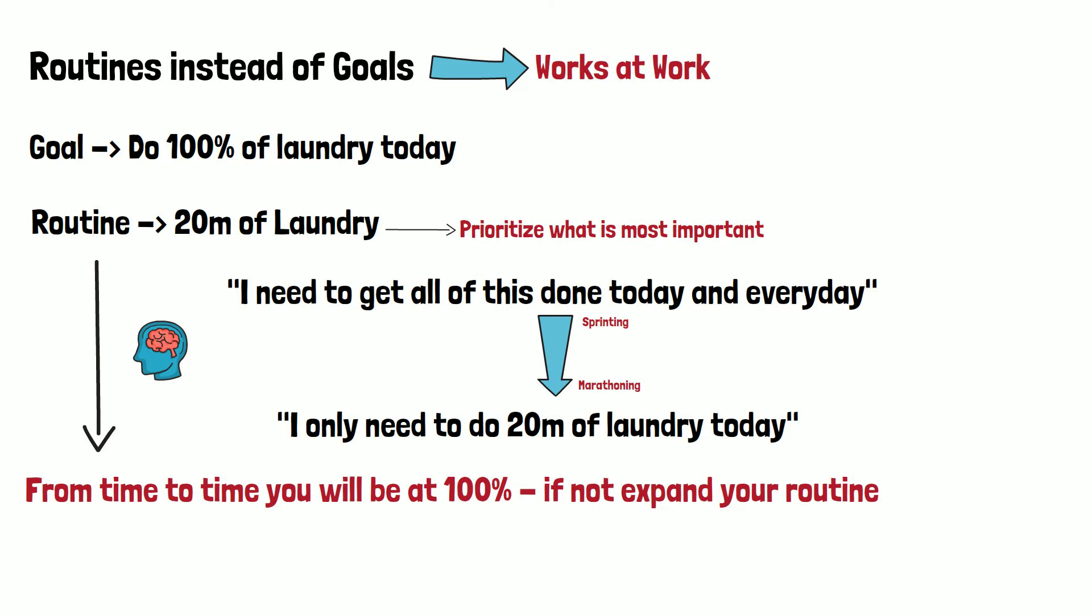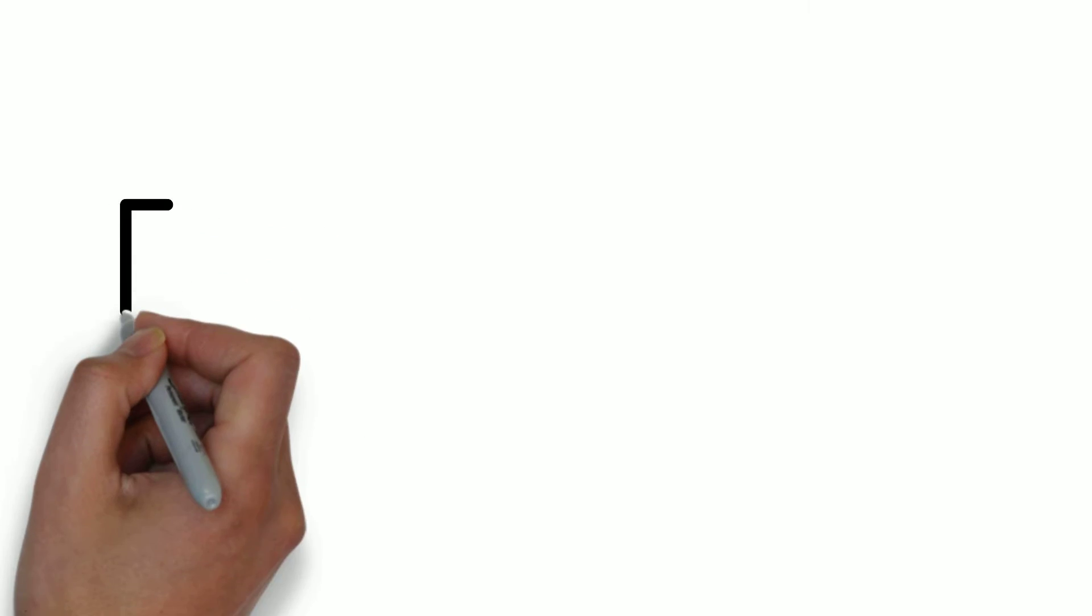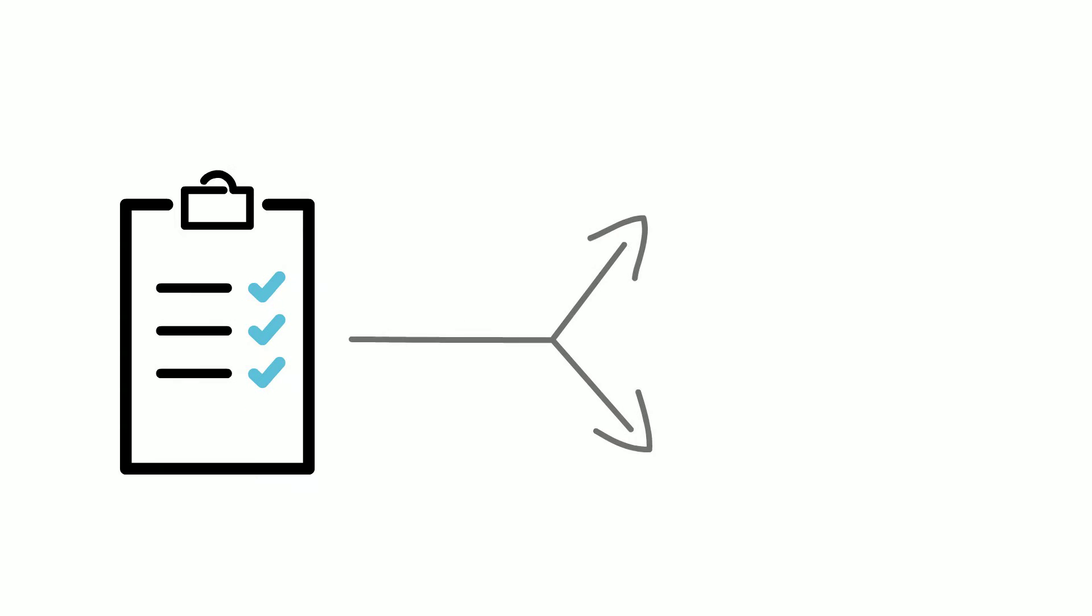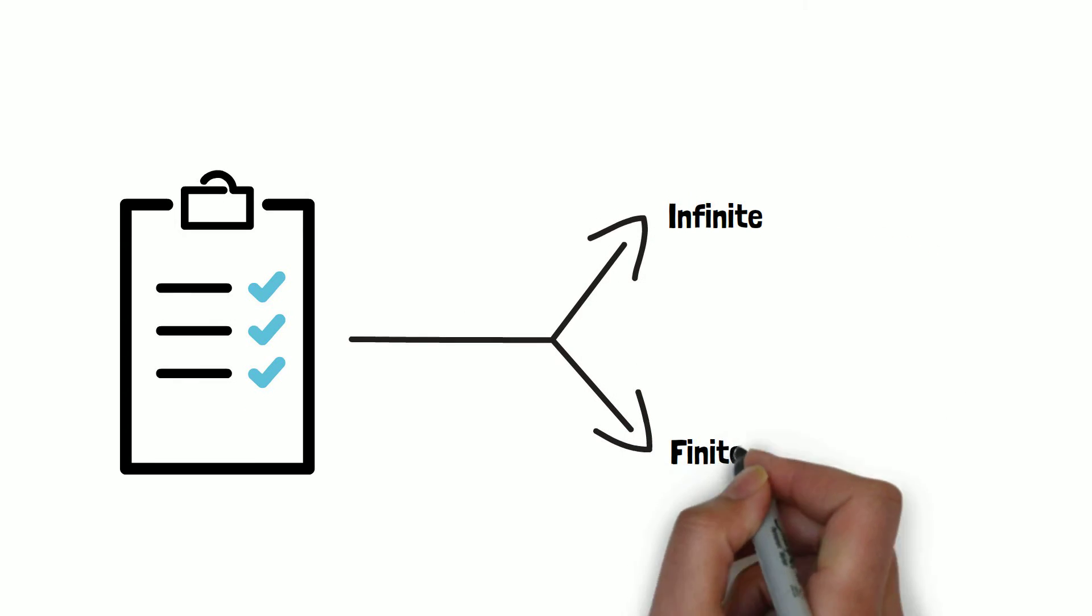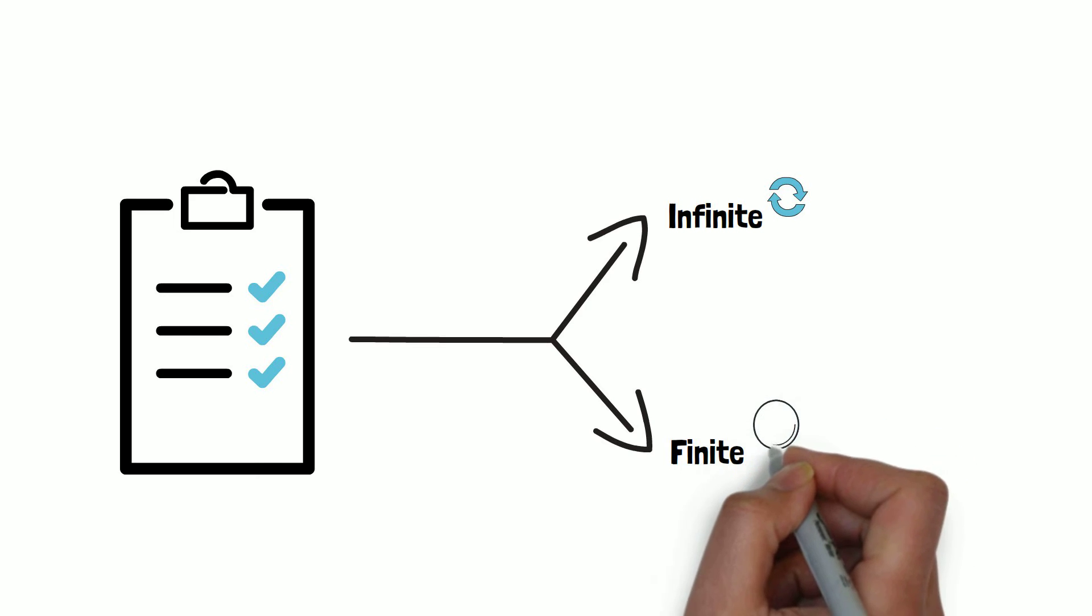What I do in my corporate job is I separate my tasks into these two categories and I have routines for my infinite tasks and I spend the rest of my time on my finite tasks. I sprint for the finite tasks, but I marathon for the infinite tasks.